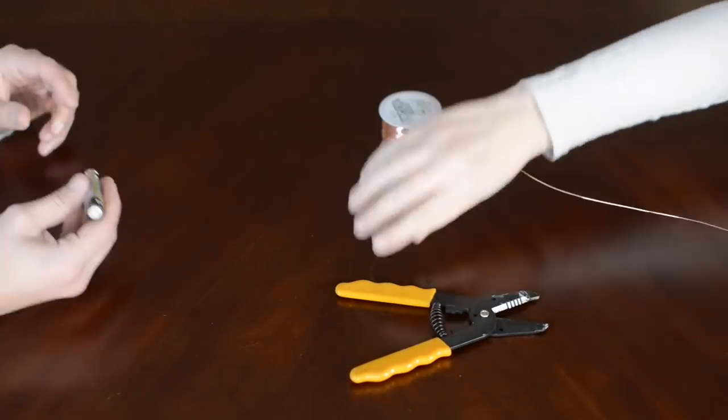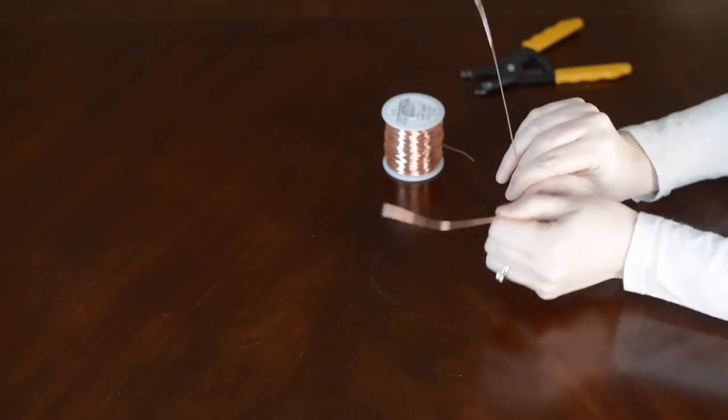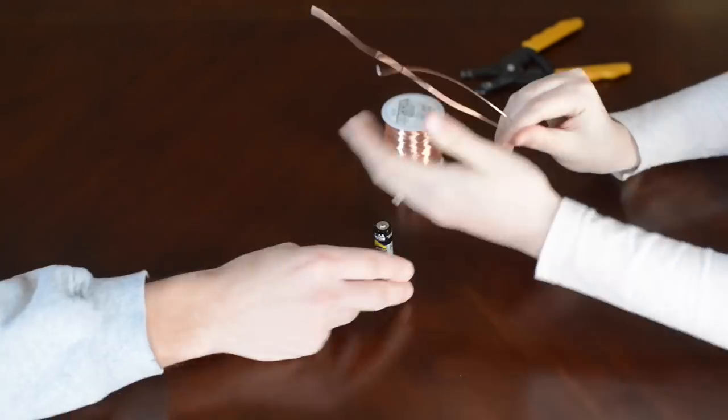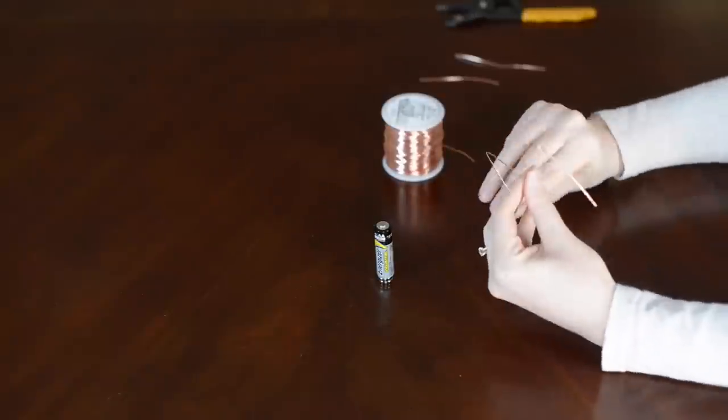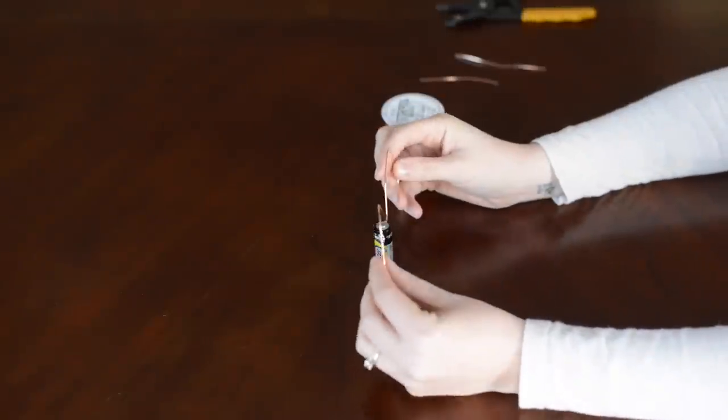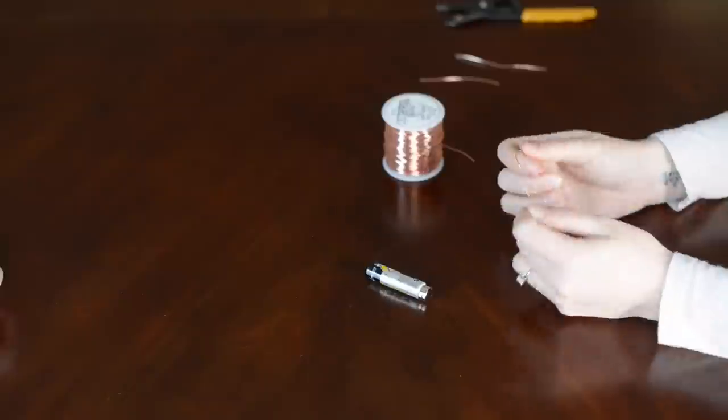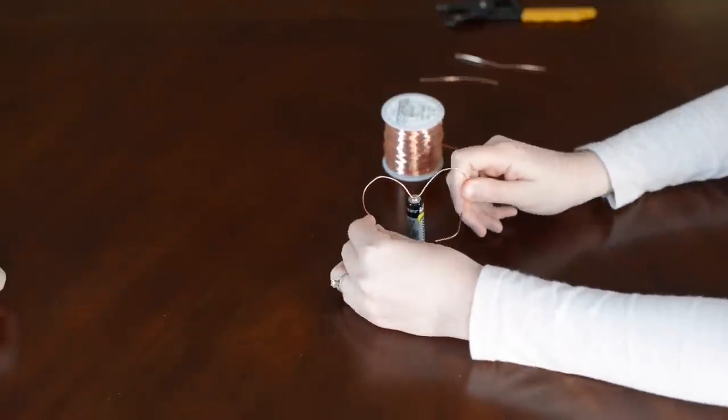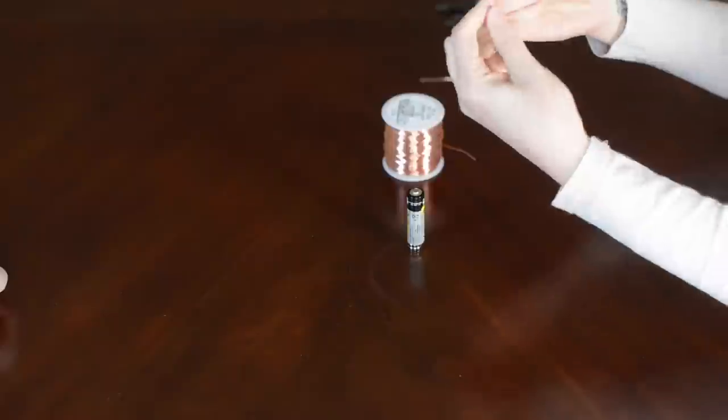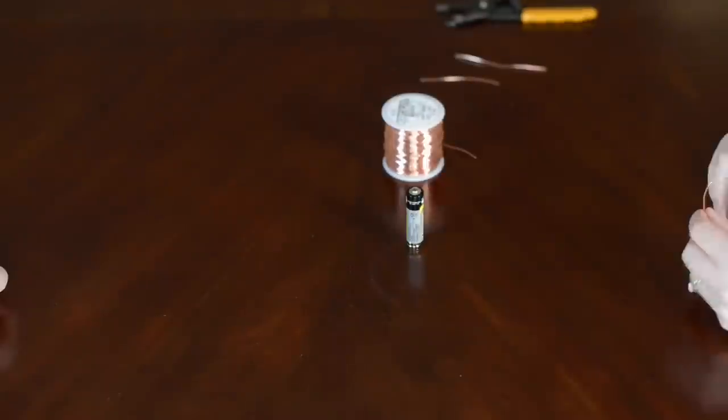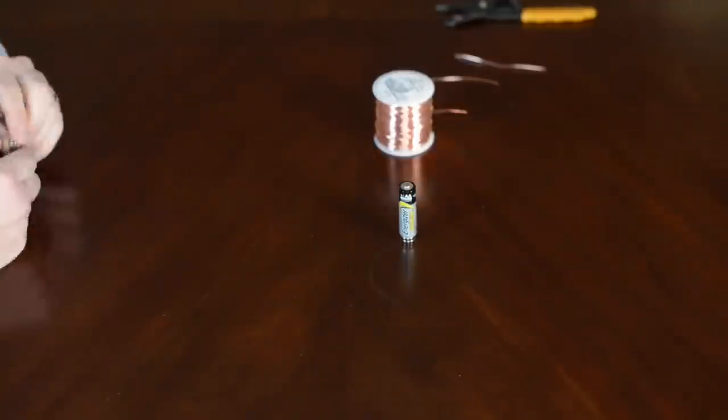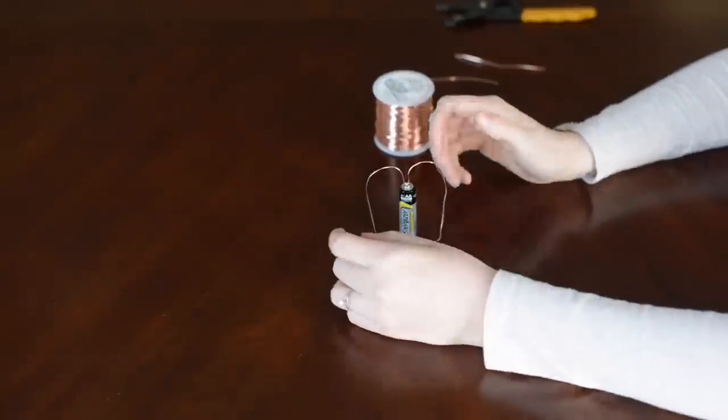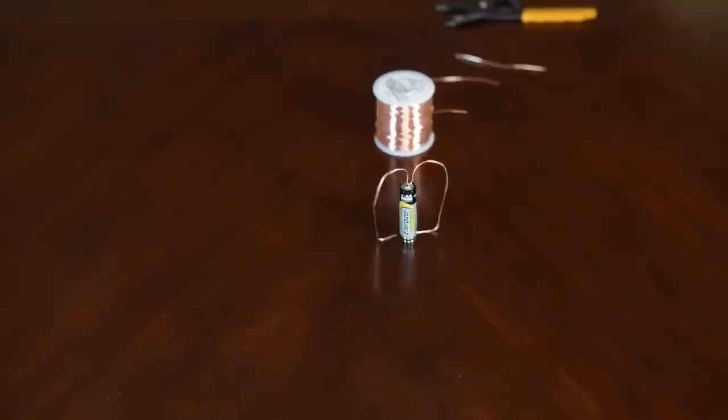And then you just take your magnets and put them at the bottom of the battery. And you take your copper wire and cut it. And the most important thing and the hardest part of all of this is you really want your wire to be balanced on either side. So you want to try to make it the same length on either side. That way it balances out.